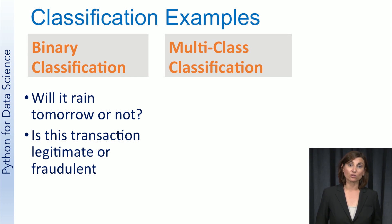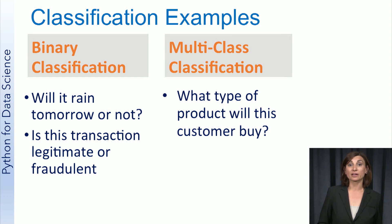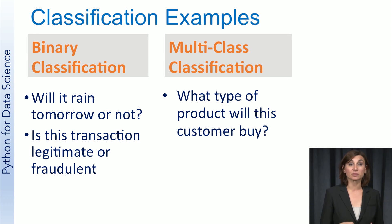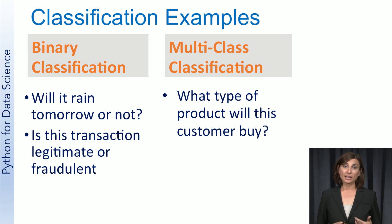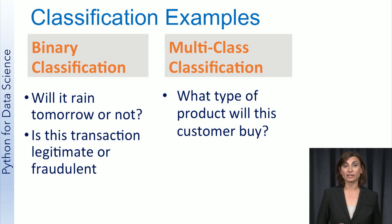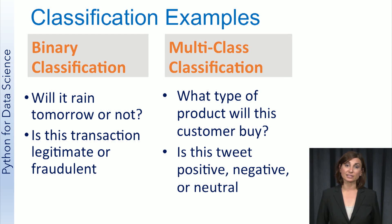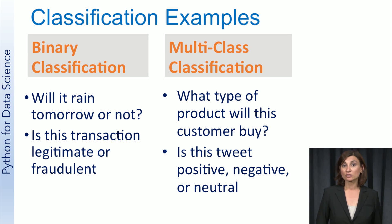Some examples of multi-class classification are predicting what type of product a customer will buy. In this case, the possible values for the target variable would be product categories such as kitchen, electronics, clothes, and things like that — there are more than two categories, so this is a multi-class classification problem. Another example is categorizing a tweet as having positive, negative, or neutral sentiment. The number of possible values for the target is more than two, so this is also a multi-class classification task.